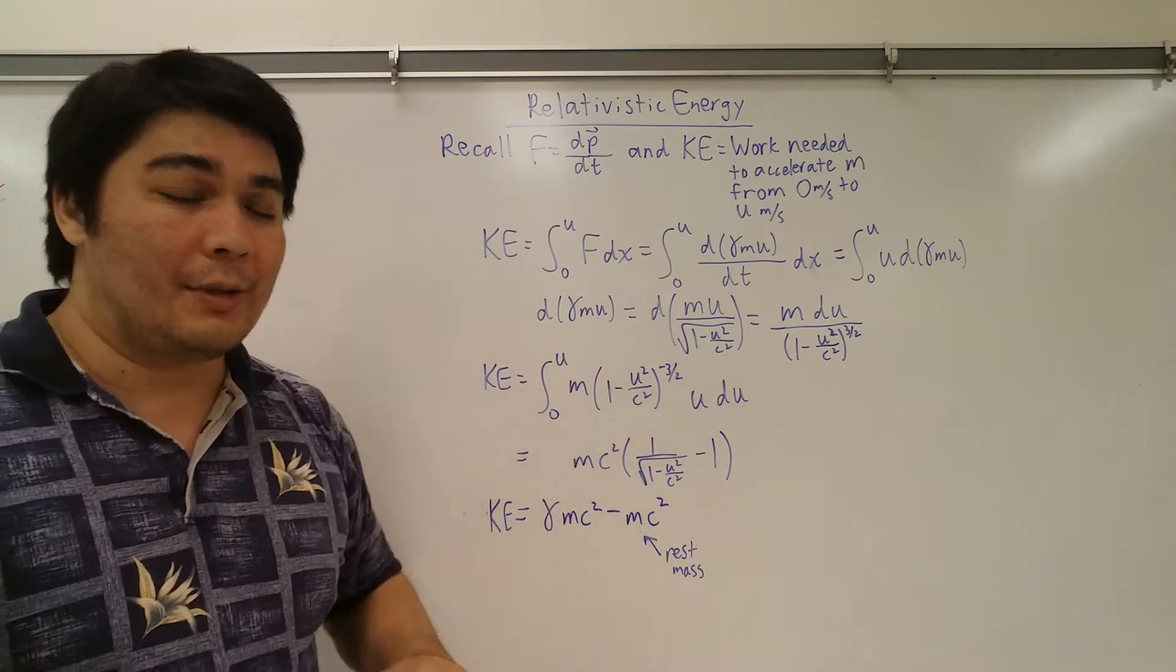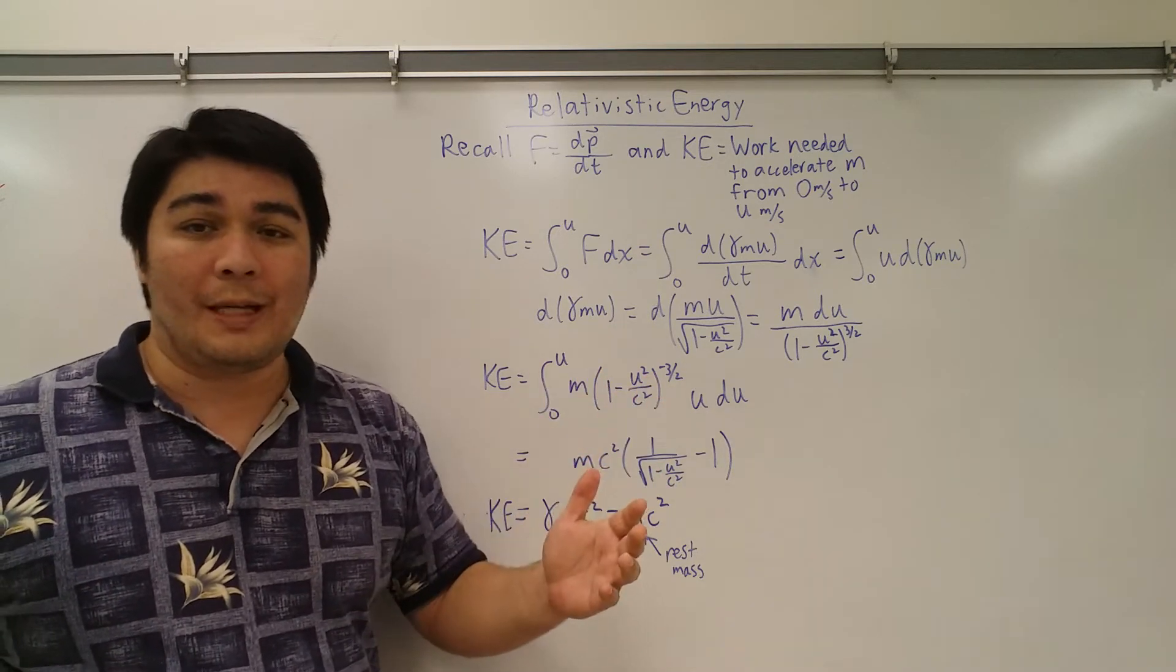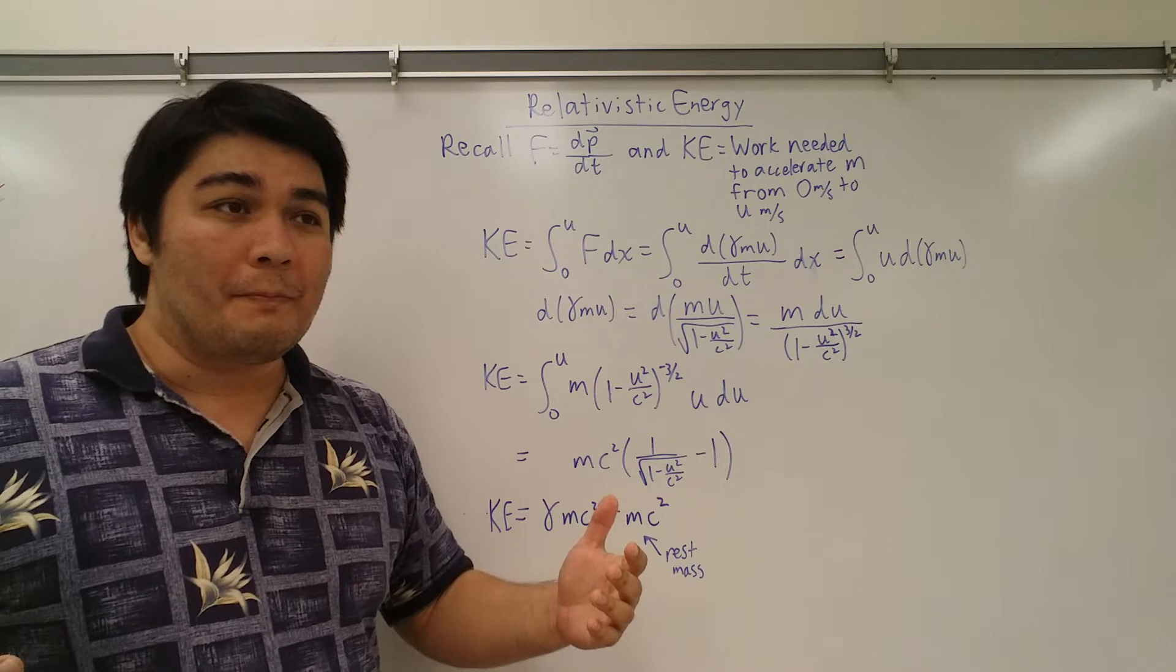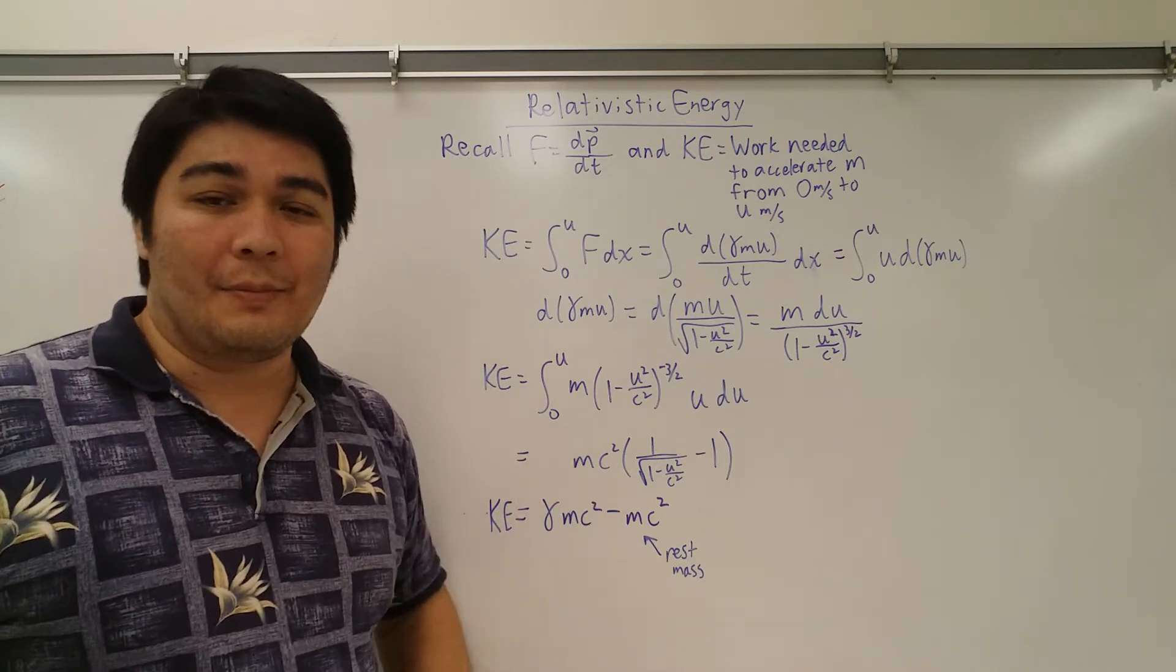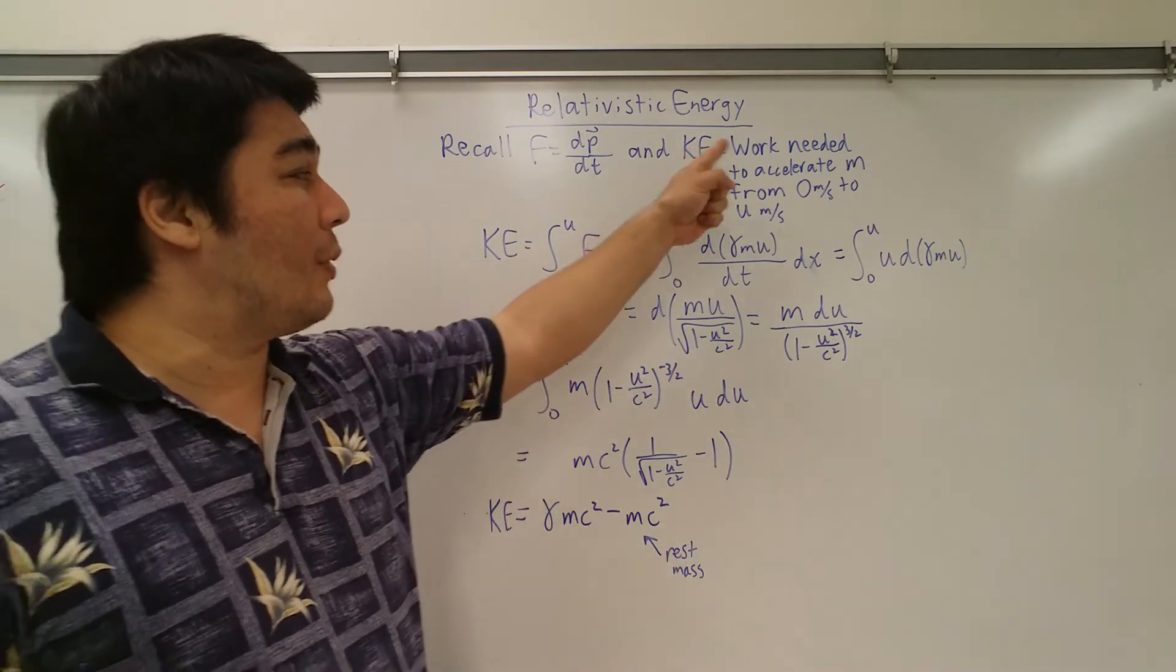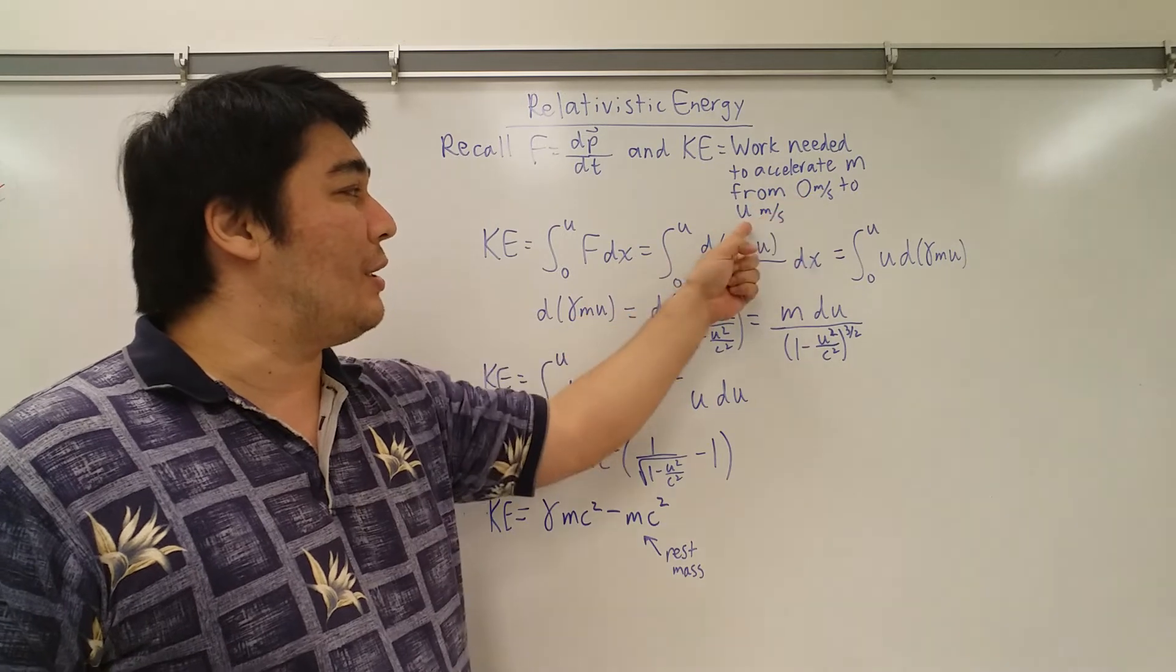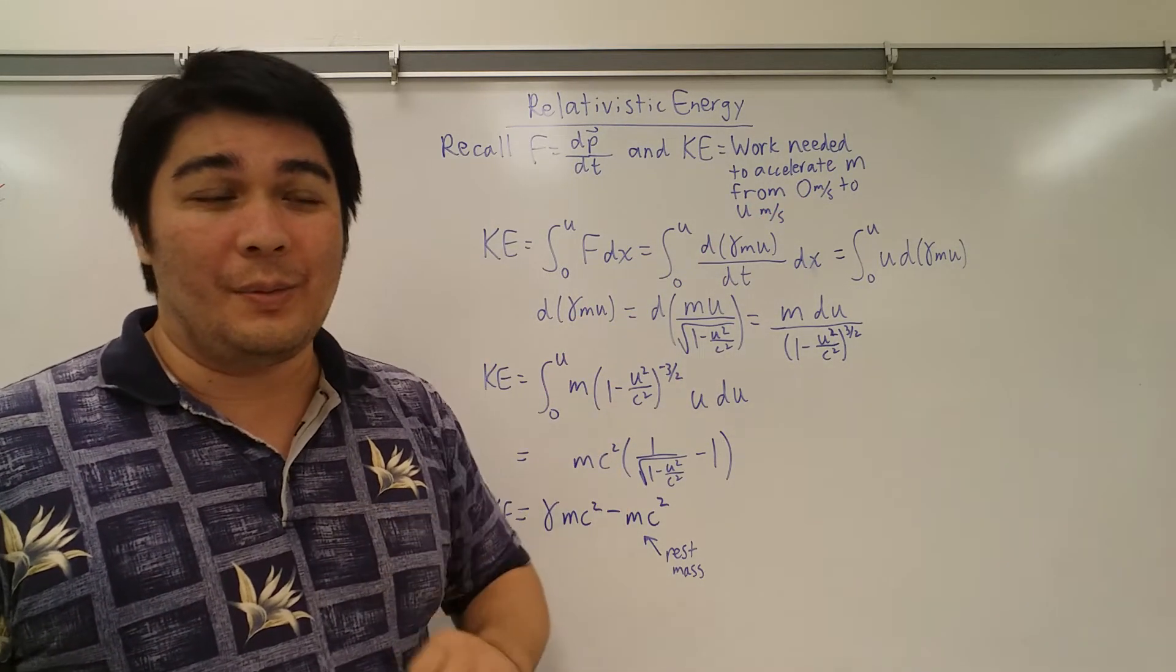So that's just semantics. It can be v if you want. I just chose to keep it u to try to keep which variables I'm using relatively constant. Okay, so let's do this. So kinetic energy, if we're going to accelerate from something from zero to u, this actually sounds like a definite integral. So here we go.